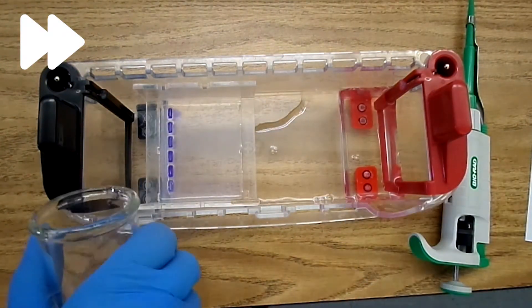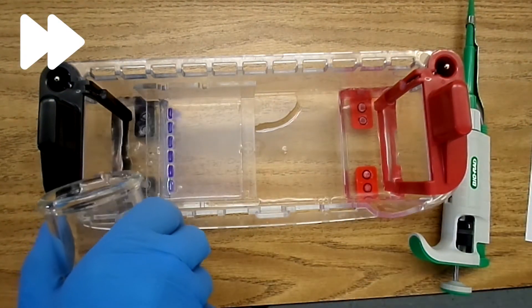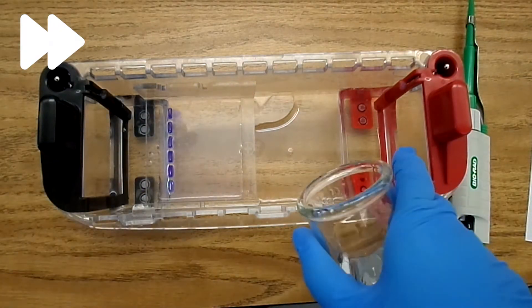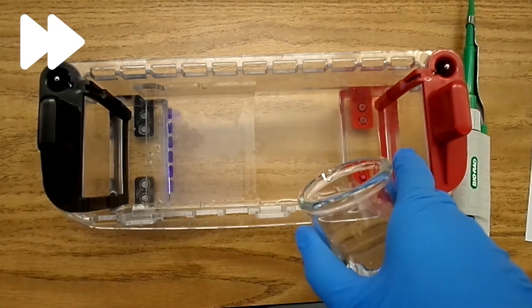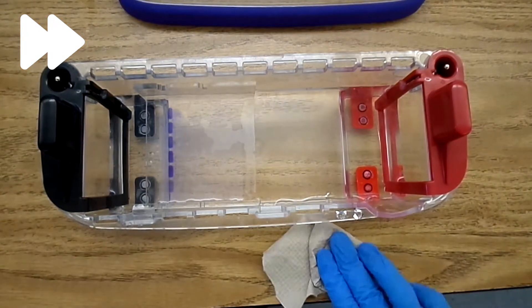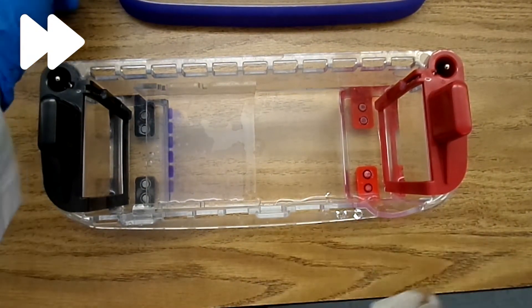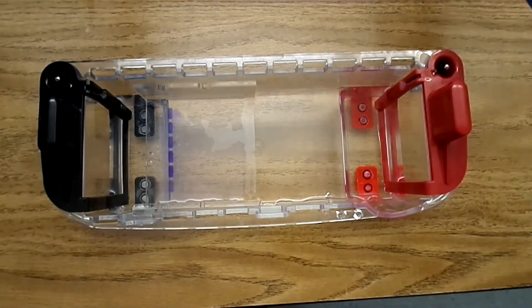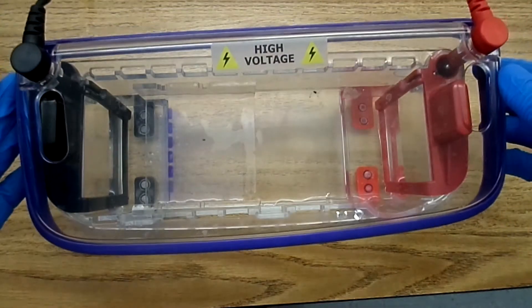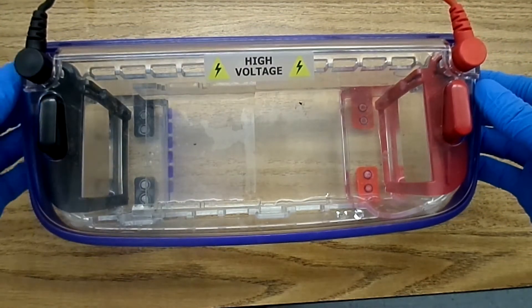Next, we're going to carefully pour in our buffer solution until it just covers the top of the gel. First I'm going to clean up any extra buffer that spilled, and then I will place the top of the gel electrophoresis chamber on so we can start the power.